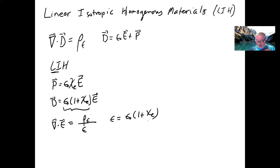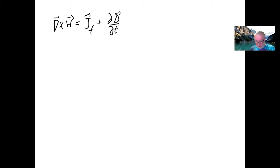But in this material there are no free charges, so rho_free is zero. And because it's a linear isotropic material, I end up with the divergence of E equal to zero. That's one of Maxwell's equations. And then if I go to the version of Ampere's law that we worked out before, I've got the curl of H is equal to J_free plus dD/dT.